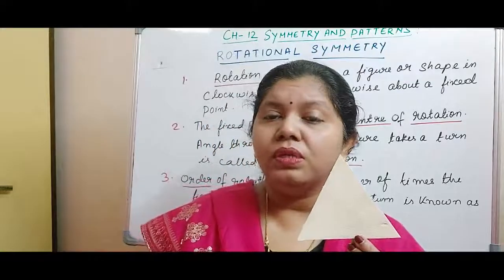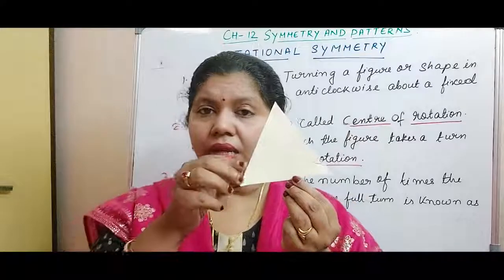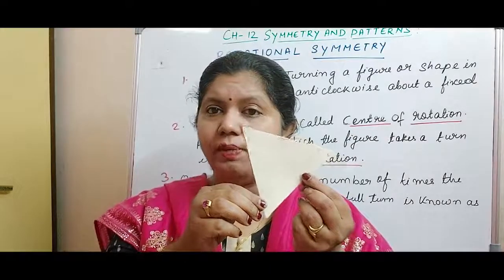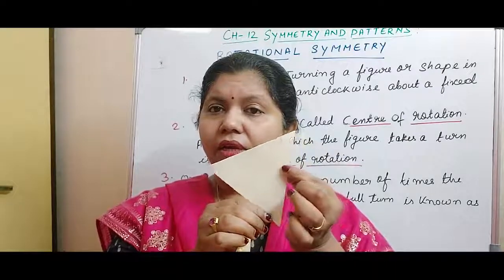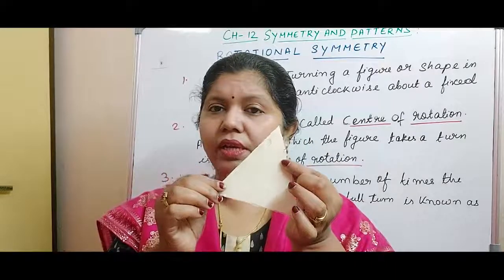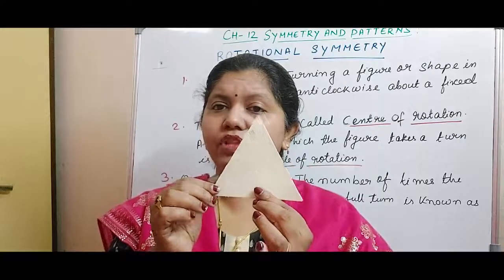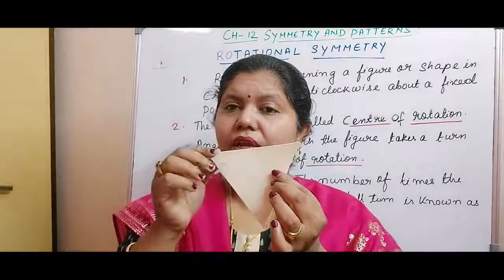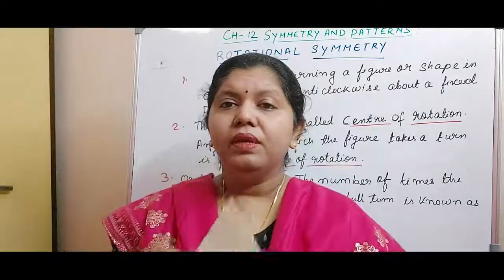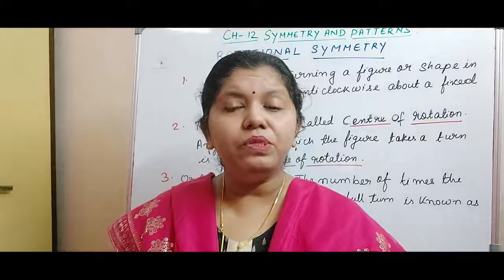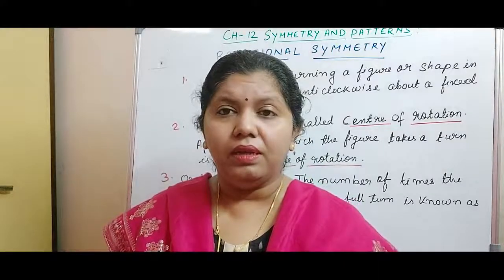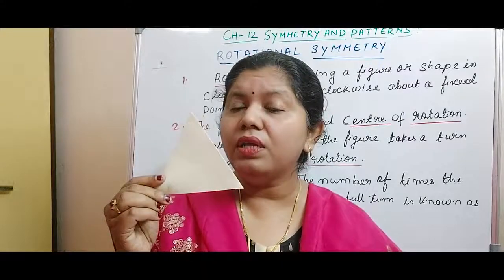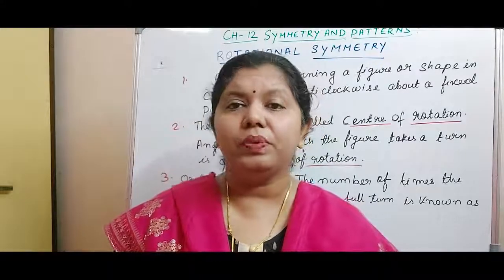Suppose my shape is this. I rotate this shape by 120 degrees — then what am I getting? I am getting the same shape. Again I am rotating the figure by 120 degrees, and again I am getting the same shape. Now how many times does 120 degrees come in 360 degrees? It is three times. So the order of rotation for an equilateral triangle is three.